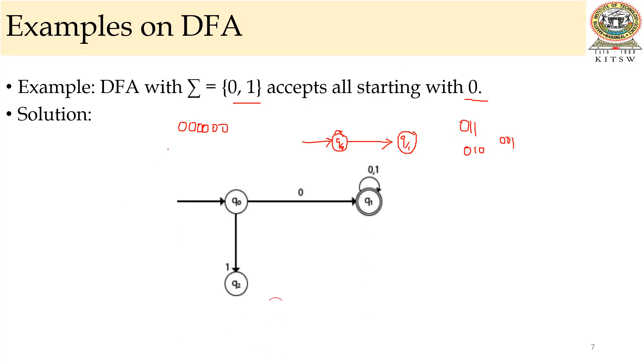Coming to the solution, this is the start state, Q0. And when you give symbol 0, it will go to the final state. And if my string starts with 1, 0, 0, it should not go to the final state. That is the reason I am giving this input here as 1. And it will go to the Q2.